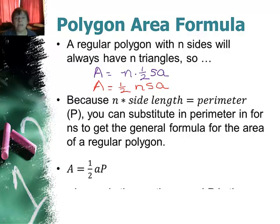Well n times s, n times the side length is the perimeter, P. So you can actually substitute and create a simpler, more general formula which is area equals 1 half the apothem times the perimeter, where a is the apothem, the altitude, and P is the perimeter.